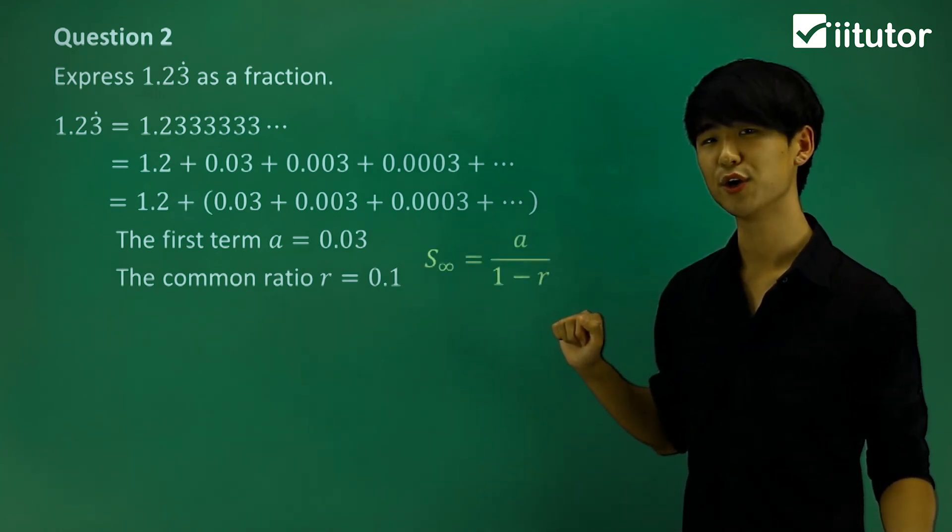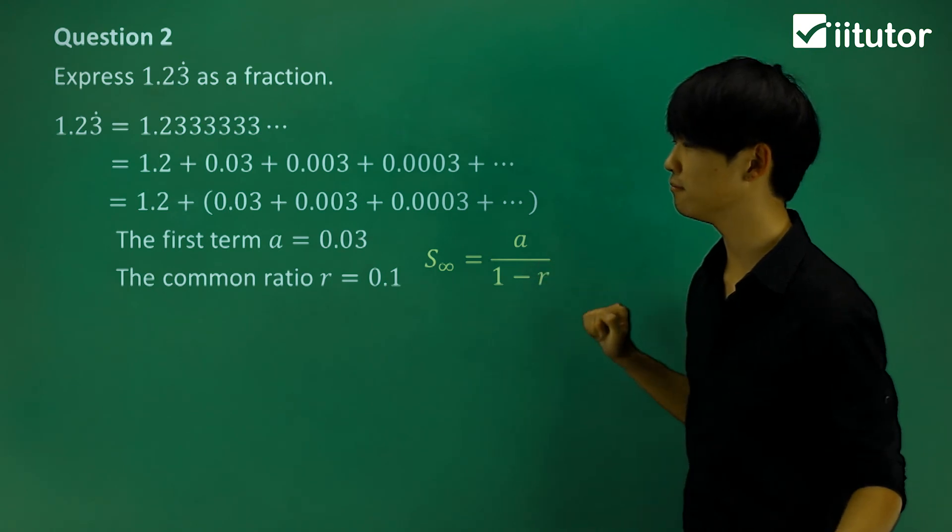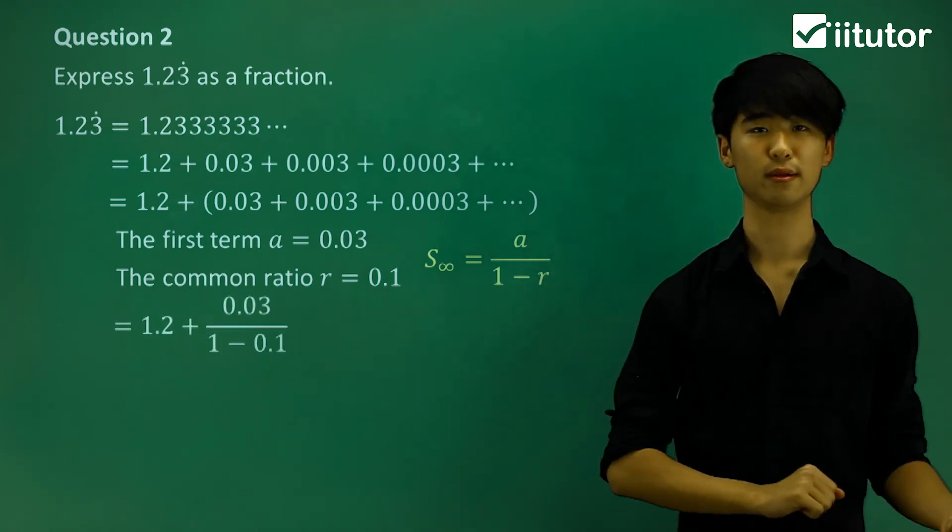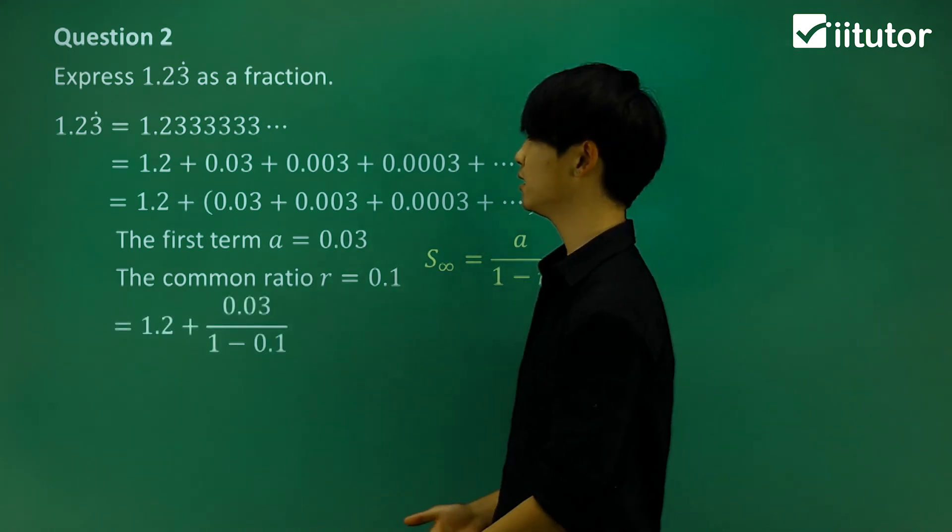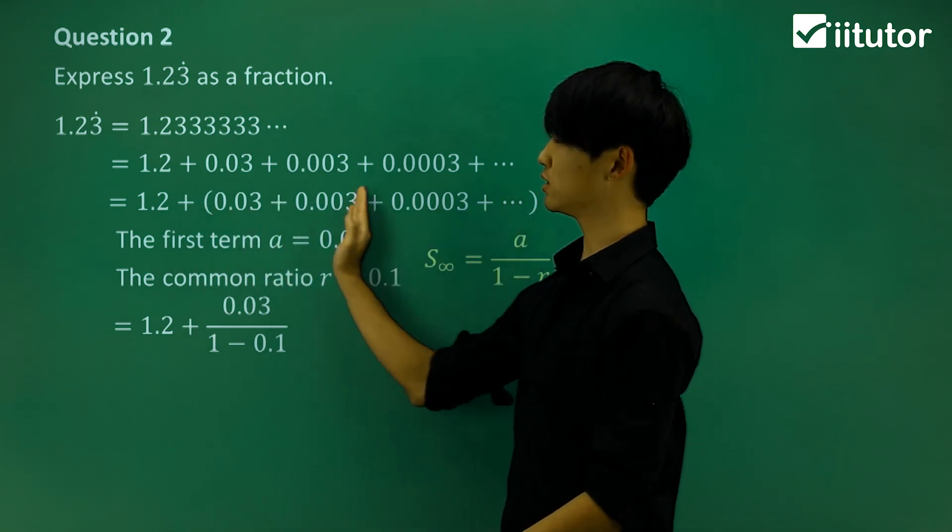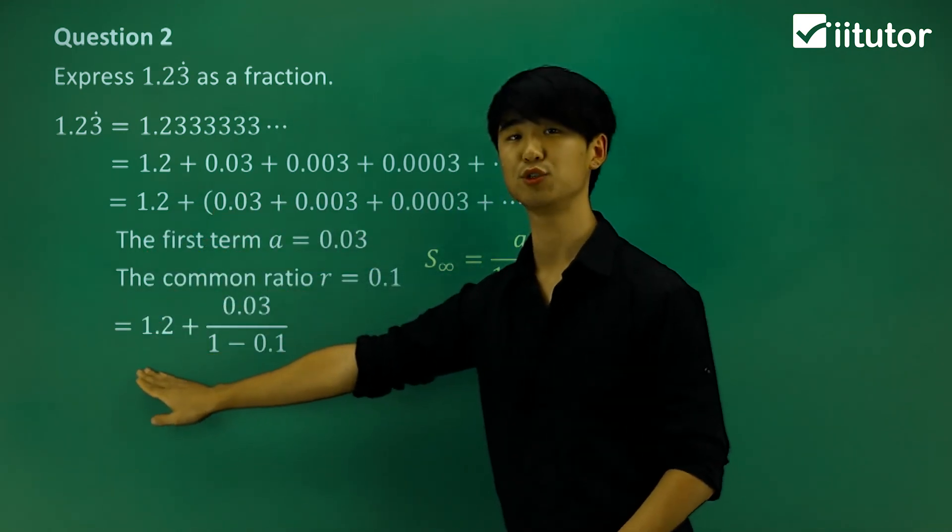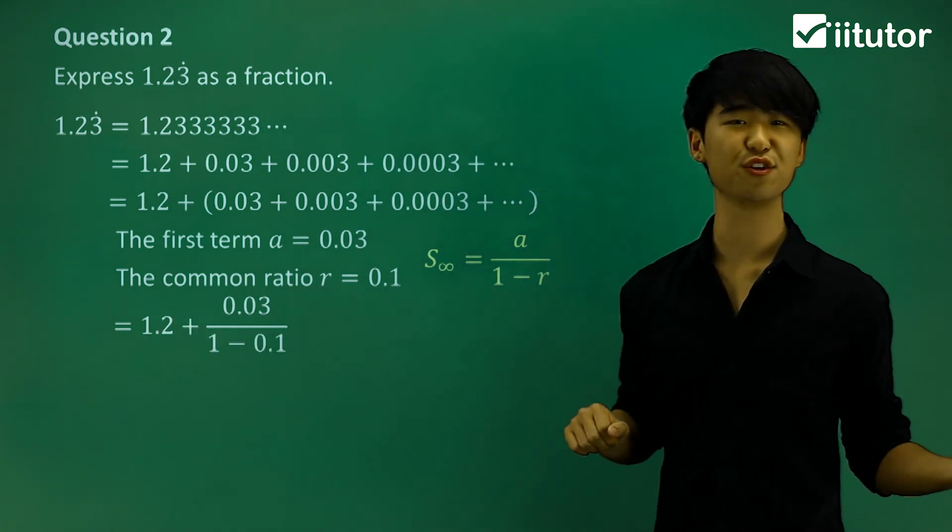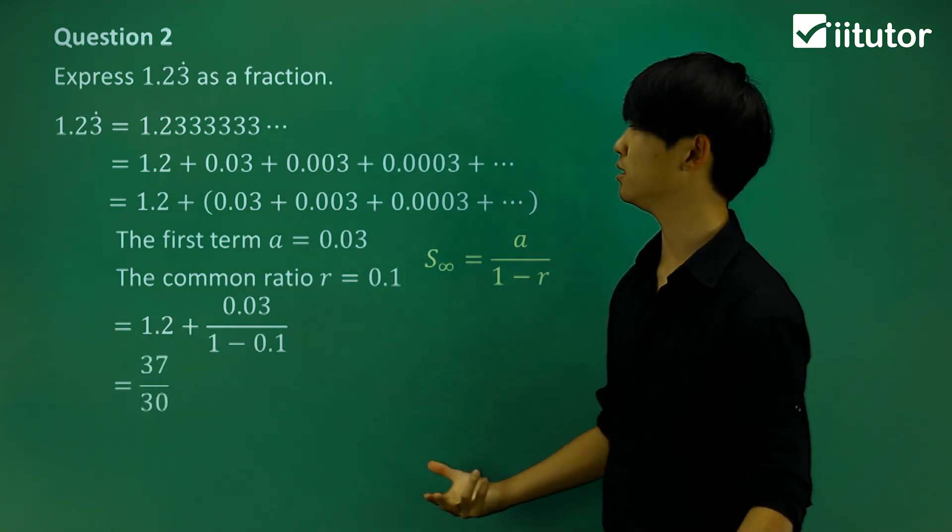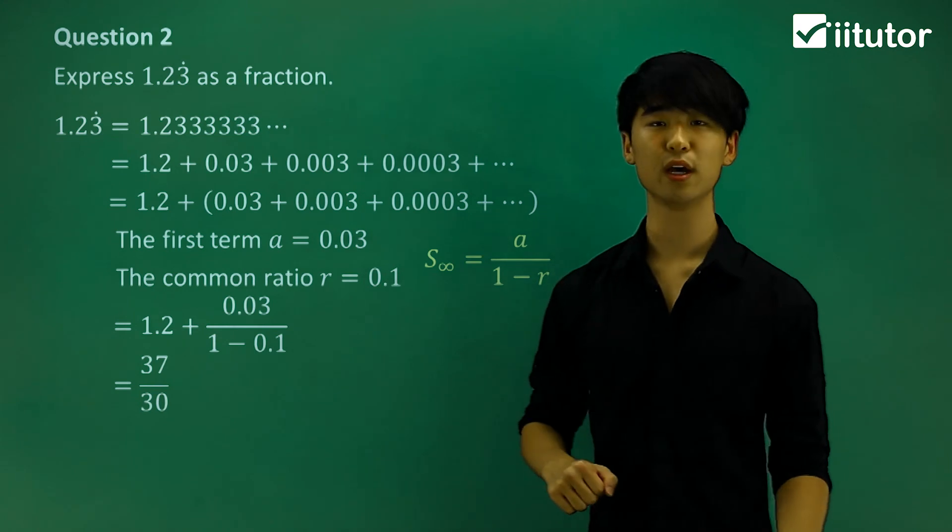So this has a limiting sum. Limiting sum is my formula, and let's just put it all in. So like we said, we found the limiting sum for just the bracket, that little geometric series. So we can't forget that we still have a 1.2 there. So just put that into your calculator, and my answer should be this fraction. So 37 over 30.